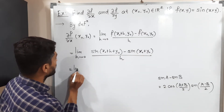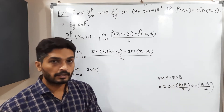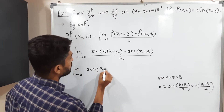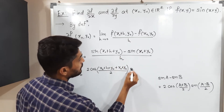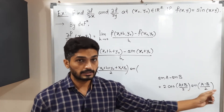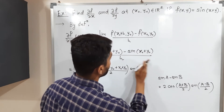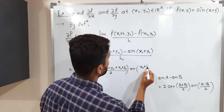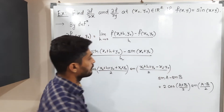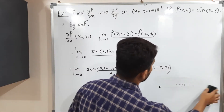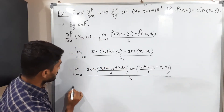Applying the formula, this equals limit h→0 of 2 cos[(x₀ + h + y₀ + x₀ + y₀)/2] · sin[(x₀ + h + y₀ − x₀ − y₀)/2] divided by h. In the sine bracket, x₀ − x₀ and y₀ − y₀ cancel, leaving only h/2 inside the sine. So we have 2 cos[(x₀ + h + y₀ + x₀ + y₀)/2] · sin(h/2), all divided by h.